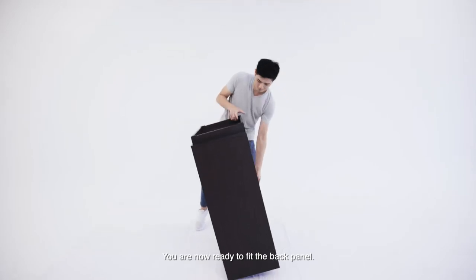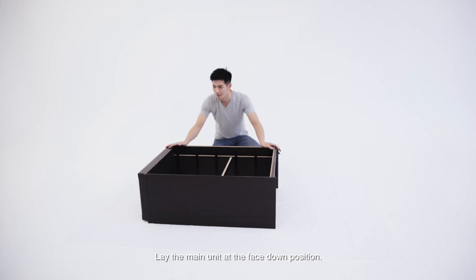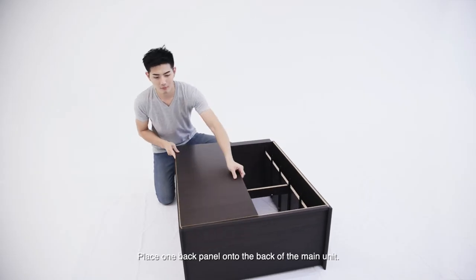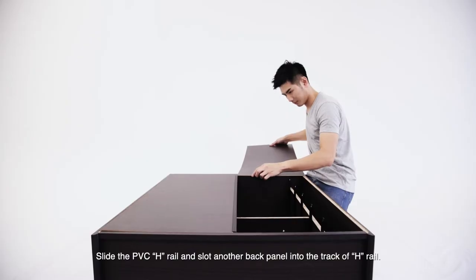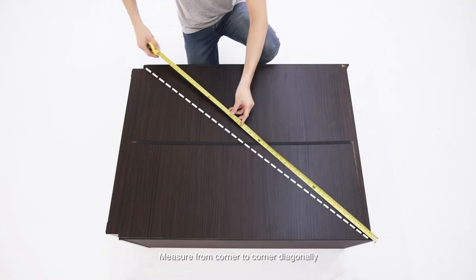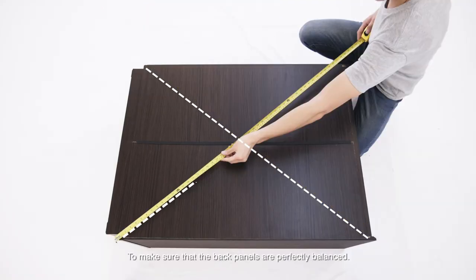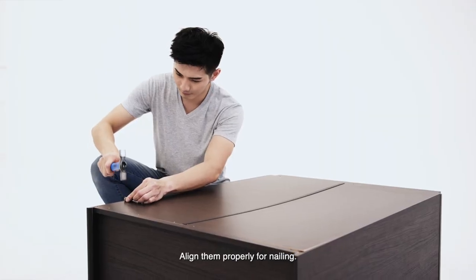You are now ready to fit the back panel. Lay the main unit in the face down position. Place one back panel onto the back of the main unit. Slide the PVC H-rail and slot another back panel into the track of the H-rail. Measure from corner to corner diagonally to make sure that the back panels are perfectly balanced. Align them properly for nailing.